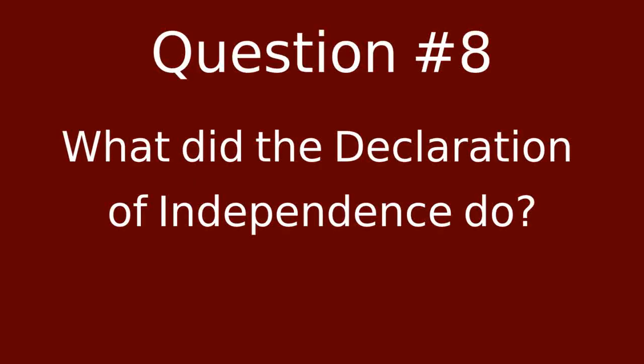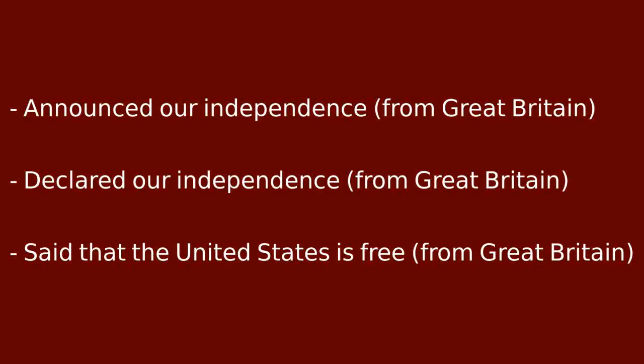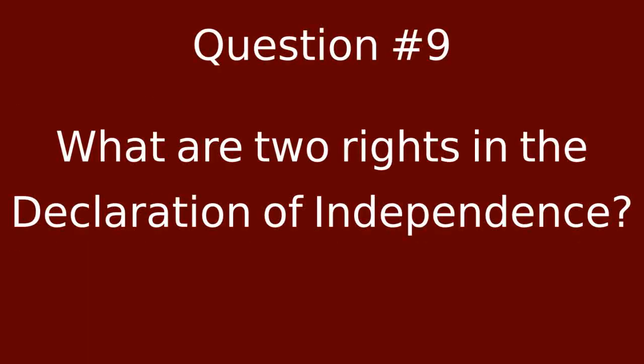What did the Declaration of Independence do? Announced our independence from Great Britain. Declared our independence from Great Britain. Said that the United States is free from Great Britain. What are two rights in the Declaration of Independence? Life. Liberty. Pursuit of happiness.